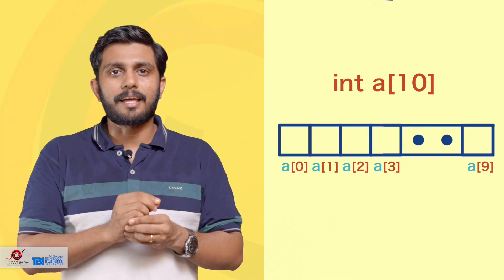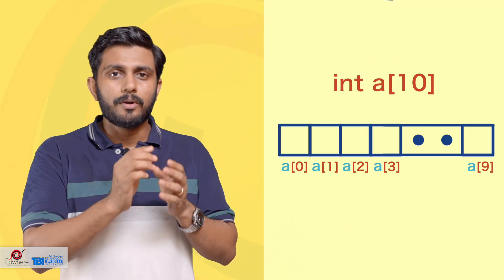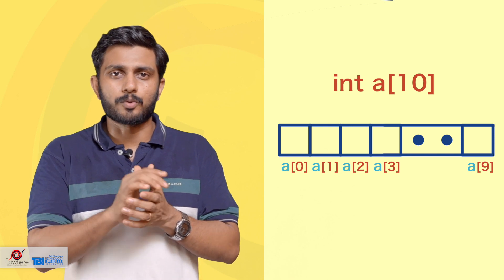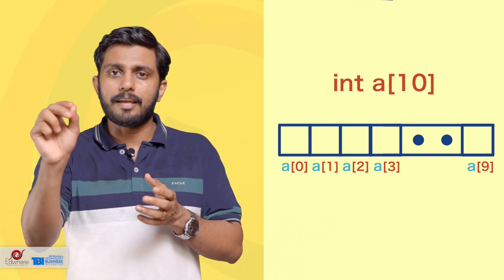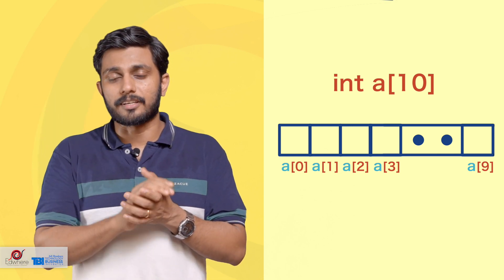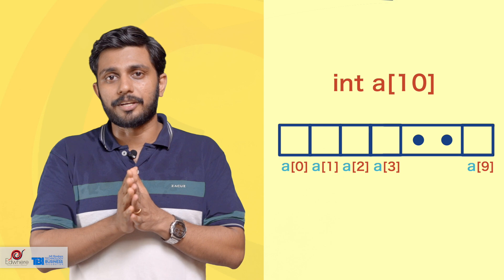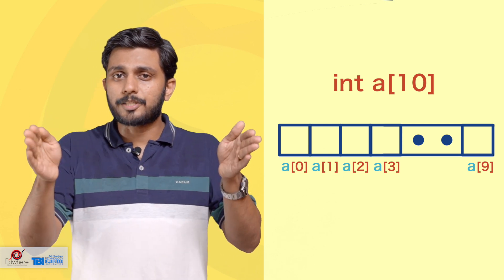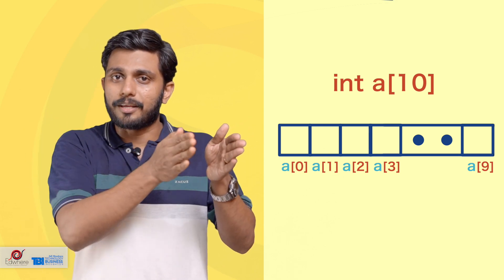This is how to visualize the 2D array. So in a single-dimensional array, we have a row in a continuous memory space. If we initialize a single-dimensional array, we have to use 10 spaces.